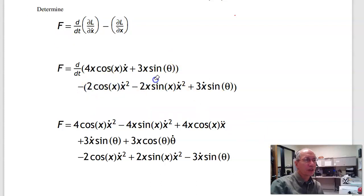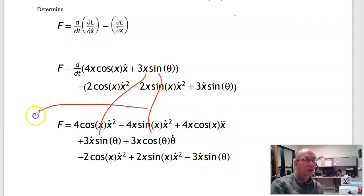Now the second term, again using chain rule. Derivative with respect to the first term gives you 3 times x-dot times sin(θ). Derivative with respect to the second term gives you cos(θ) times θ-dot. And then these terms just drop down. So this is your answer.